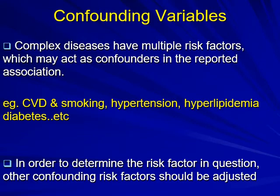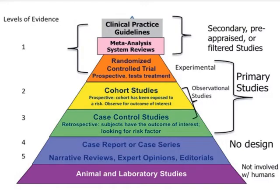What is the confounding variable? Very important. We've seen the pyramid before, which tells you which research has the higher level of evidence. Number one on top is meta-analysis and systematic reviews. They are secondary pre-appraised or filtered studies — you take many primary studies, filter them, and do the appraisal through meta-analysis, whether statistical or systematic reviews. The studies selected must be homogenous.